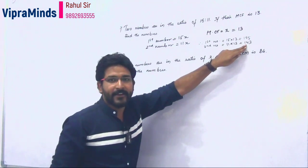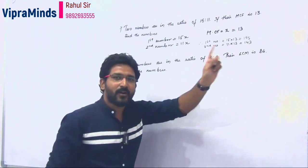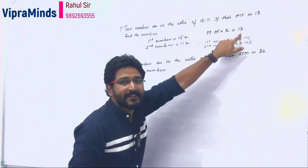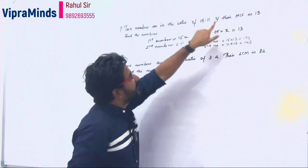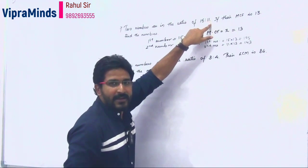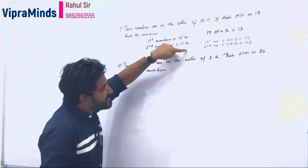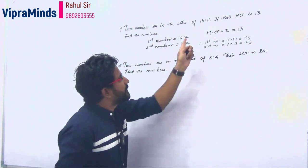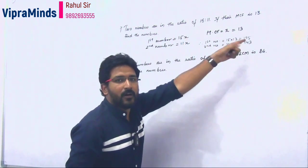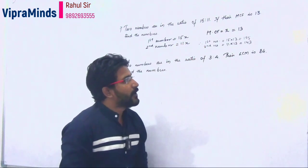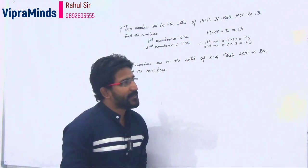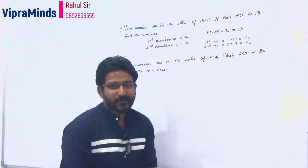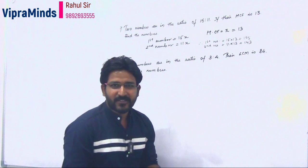To summarize: when we have the ratio, the common factor that cancels is the HCF. Here the ratio is 15 to 11, and the common factor is the HCF which equals x. Since HCF is 13, x is 13. Multiplying gives us 195 and 143. So when you have two numbers and this method, you can find out the numbers.